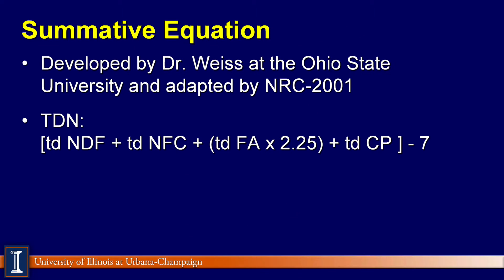The newest equation from the NRC 2001 is called the summative equation, developed by Dr. Bill Weiss at The Ohio State University and adopted by the NRC. The summative equation simply adds these components together with a slightly different twist. TDN is calculated by taking true digestibility — very difficult to analyze in a lab but critical for the cow. The first component is truly digestible NDF, or neutral detergent fiber, which is the cell wall.